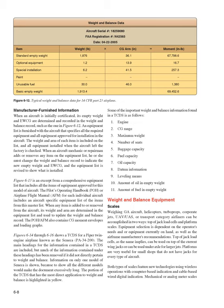The Pilot's Operating Handbook (POH) or Airplane Flight Manual (AFM) for each individual aircraft includes an aircraft-specific equipment list. When any item is added or removed, its weight and arm are determined from the equipment list and used to update the weight and balance record. The POH/AFM also contains CG moment envelopes and loading graphs. Figures 6-14 through 6-16 show a TCDS for a Piper twin-engine airplane, the Seneca PA-34-200, with weight and balance relevant portions highlighted.